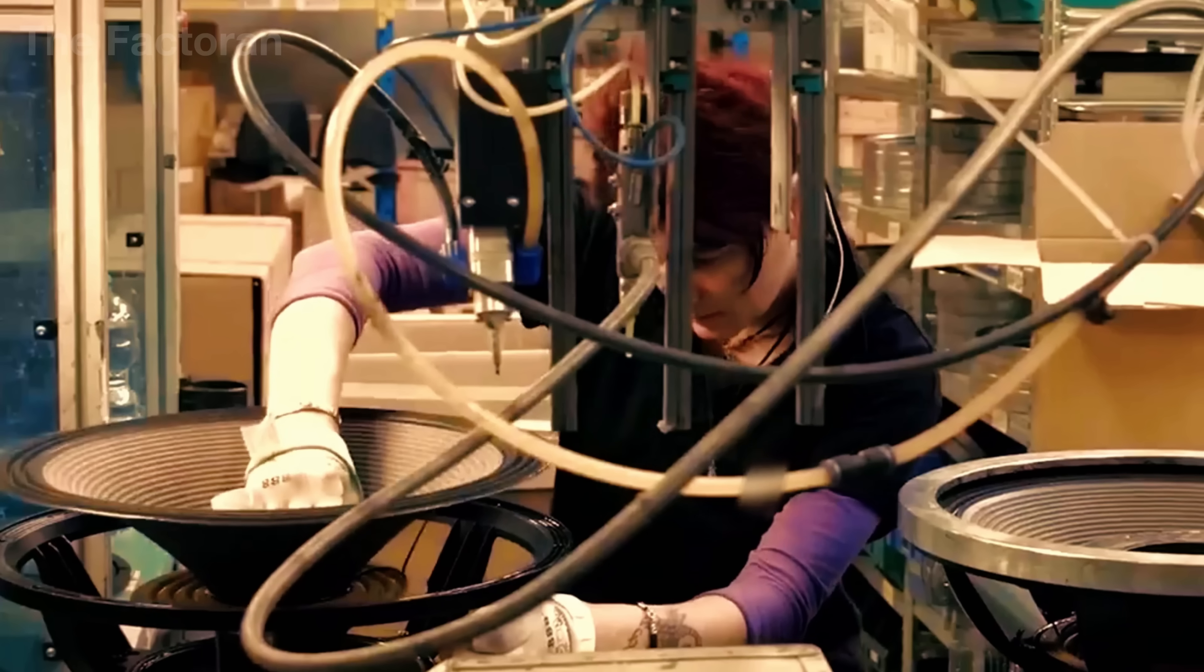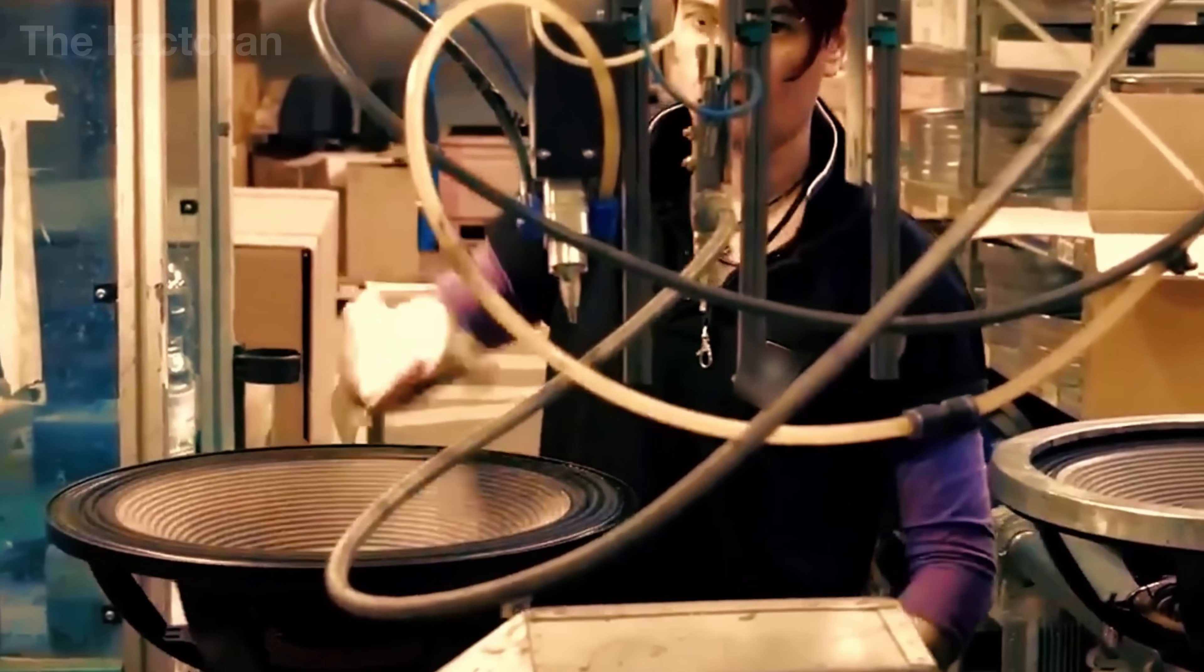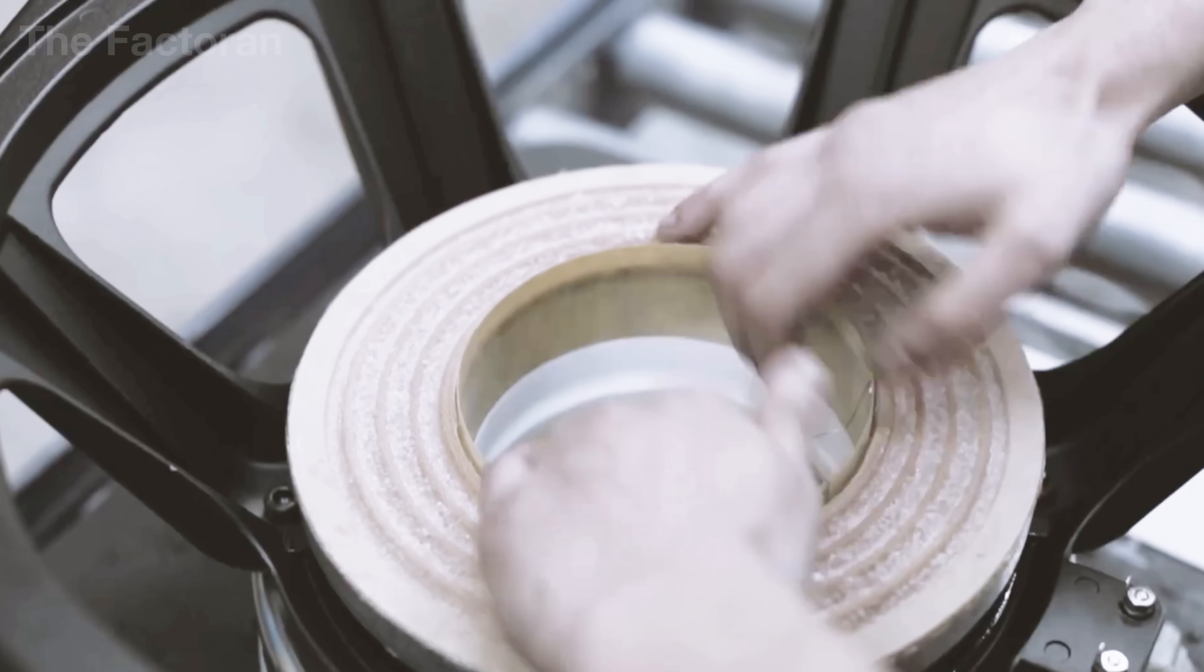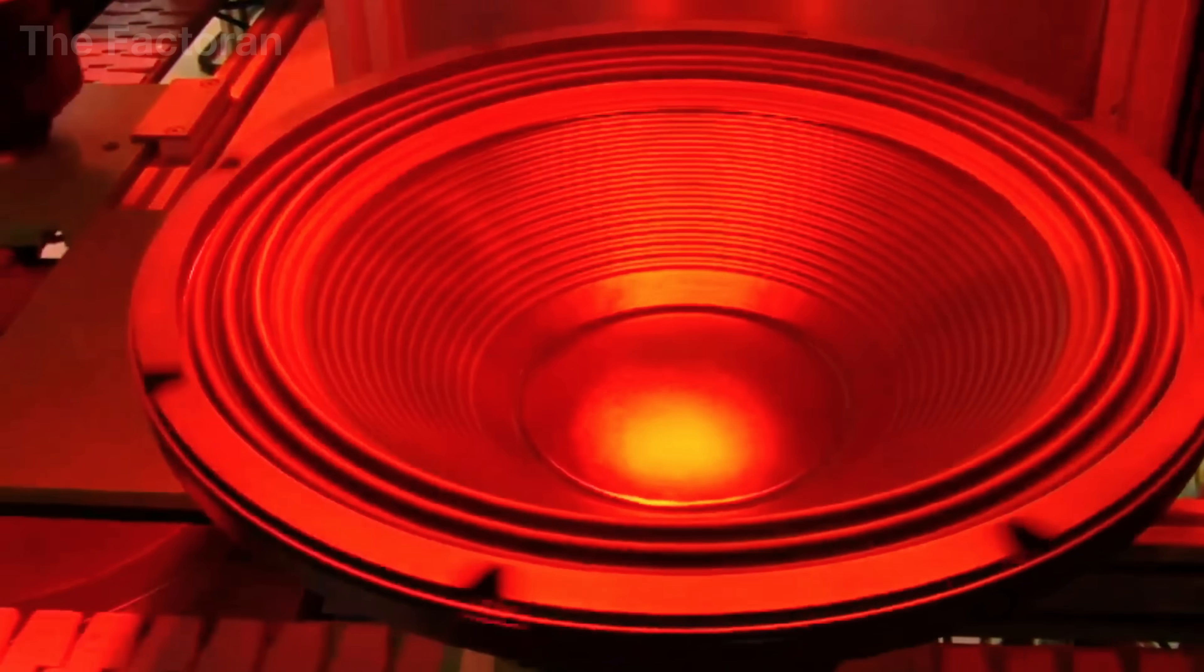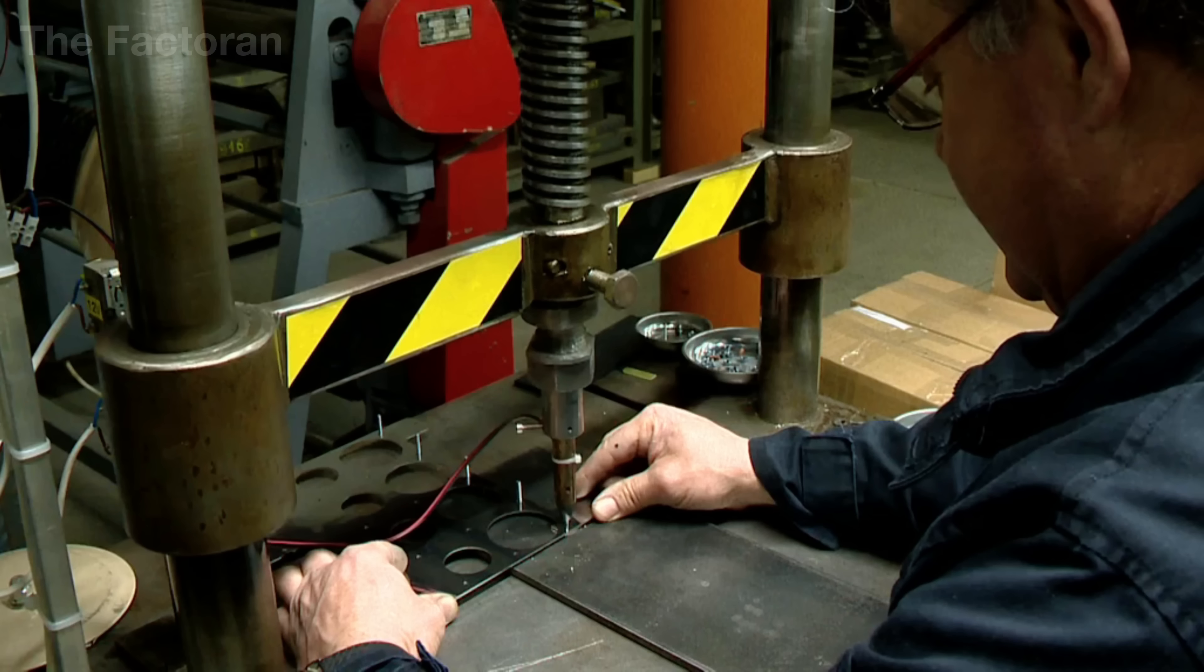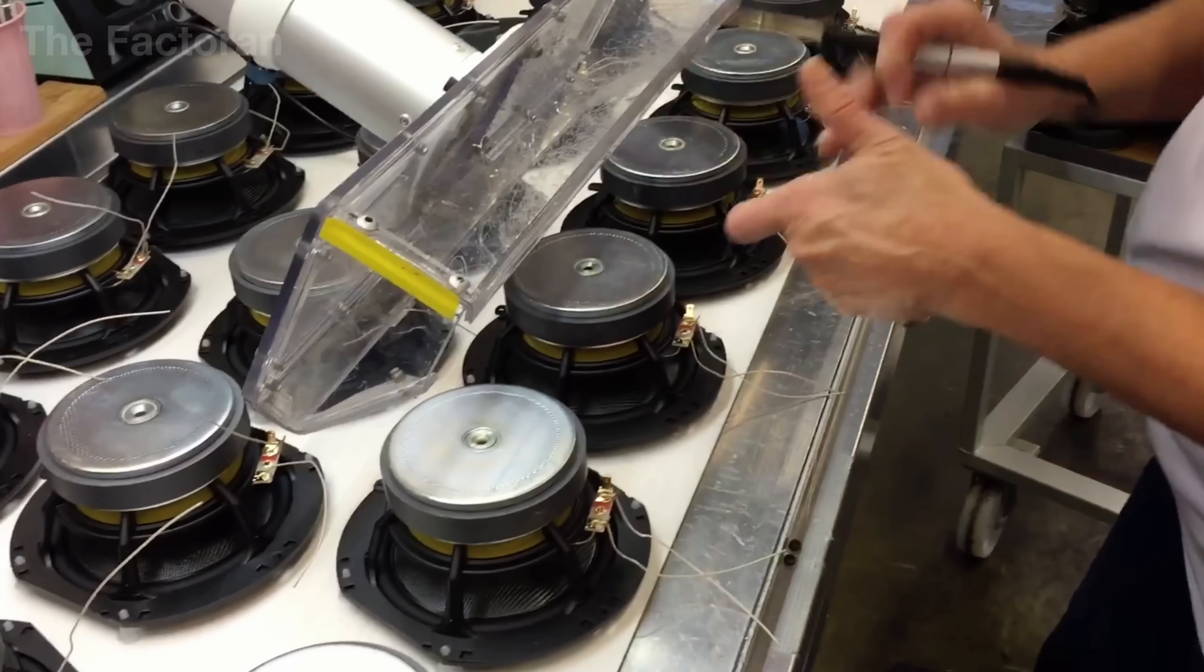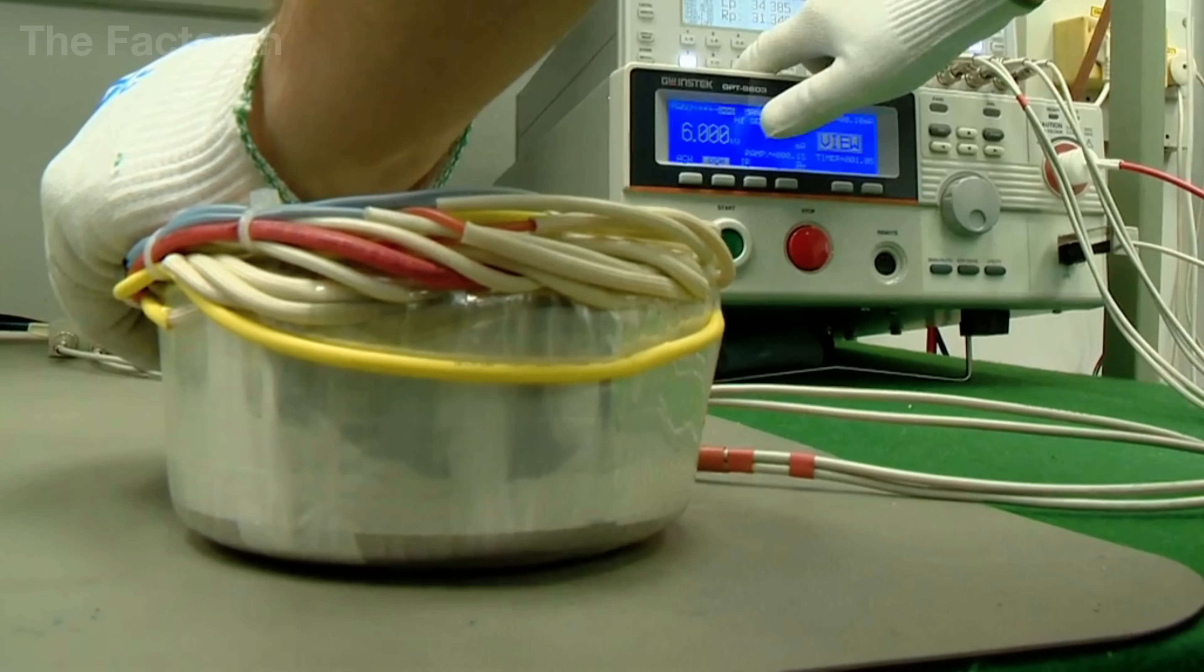At the same time, the diaphragm, made from compressed paper, polymers, or carbon fiber materials, is positioned and bonded directly to the coil using specialized adhesive. This stage requires both mechanical precision and skilled craftsmanship. Even slight misalignment can cause coil rub and distortion. It is here that a speaker's clarity and accuracy are truly shaped.